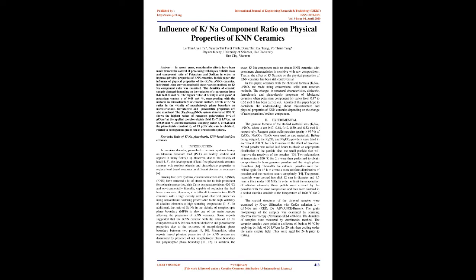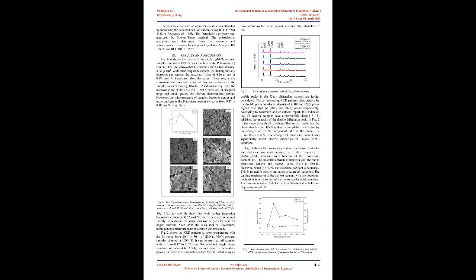In this paper, ceramics with the chemical formula K(X)NA(1-X)NBO3 are made using conventional solid-state reaction methods. The changes in structural characteristics, dielectric, ferroelectric and piezoelectric properties of fabricated ceramics when potassium component X varies from 0.47 to 0.52 mole percent has been carried out. Results of this paper hope to contribute to the understanding of microstructure and physical properties of KNN ceramics depending on the change of potassium-to-sodium component ratio.